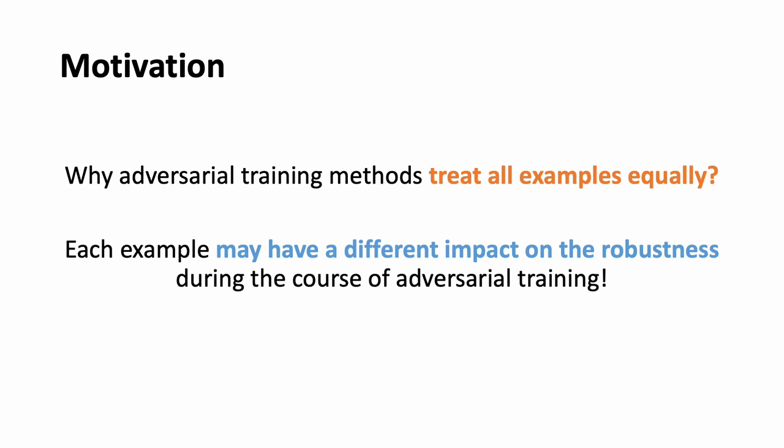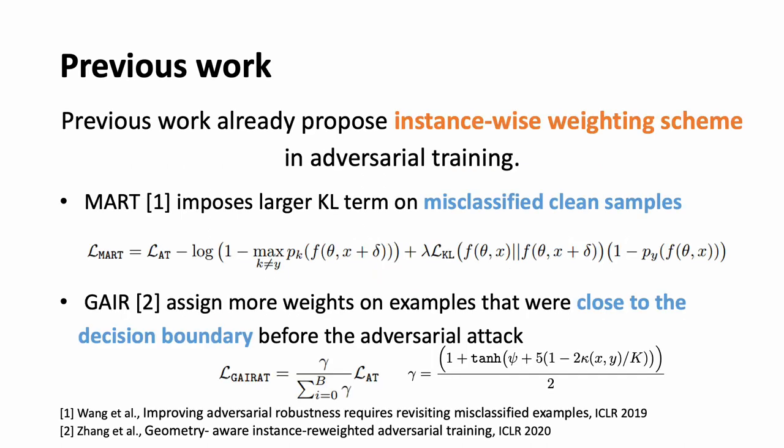The starting point of our work was to question why current adversarial training methods treat all examples equally. It seems natural that each example might have a different impact on robustness. In response to this, some researchers have proposed instance-wise weighting schemes in adversarial training. I will introduce two of the most prominent previous works in this area: MART and GEHR.